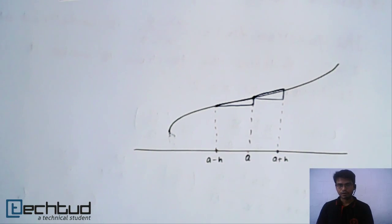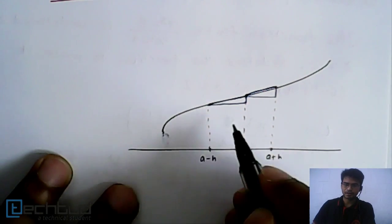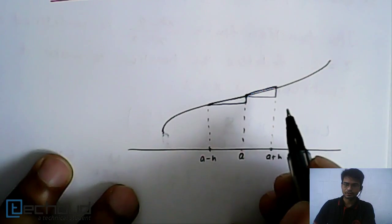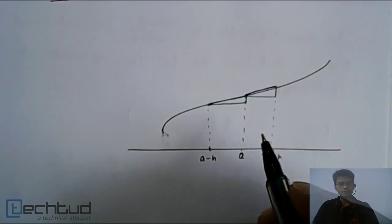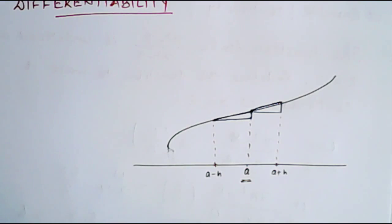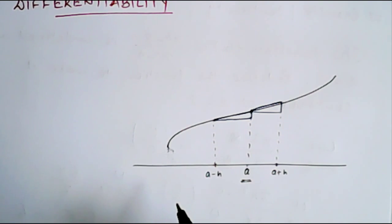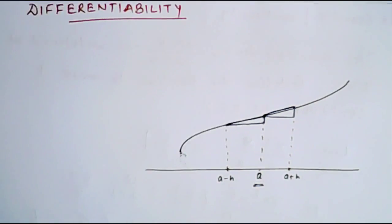So now what do we understand here? Let's say this is a curve given. We have a curve and we want to find out whether the differentiability of this function exists at point x equal to a. To check this, we will find out the left hand derivative and right hand derivative.